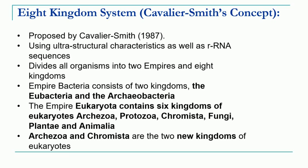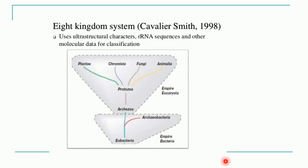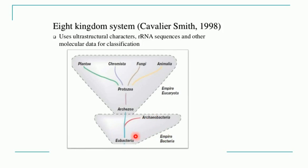Archeozoa and Chromista are the newly introduced kingdoms in the eukaryotes compared to the previous system. In this 8-kingdom system proposed by Cavalier and Smith, classification is based on ultrastructure characters, RNA sequences, and other molecular data. Empire Bacteria includes all the prokaryotes — whether ancient bacteria or true bacteria — clubbed together into two kingdoms. Empire Eukaryota consists of the remaining 6 kingdoms: Archeozoa, Protozoa, Plantae, Chromista, Fungi, and Animalia.